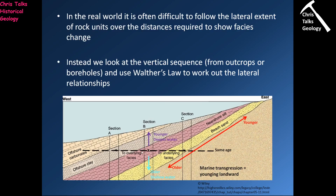Walther's Law allows us to say: we can see this vertically, so we know what's going to happen as we move laterally from our starting location. As soon as we recognize a marine transgressive sequence, we know the siltstones must be superimposing over the sandstone, the claystone over the siltstone, and the carbonates over the claystone. Walther's Law gives us confidence in predicting what we'll see if we move laterally from our starting location.